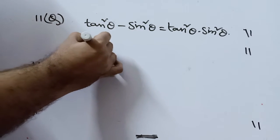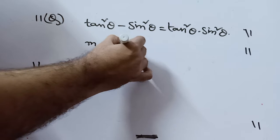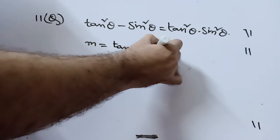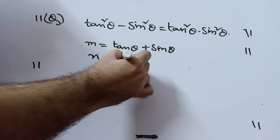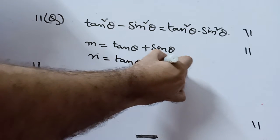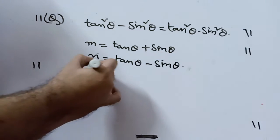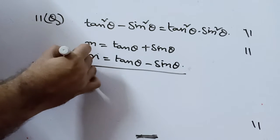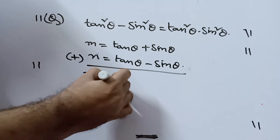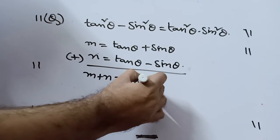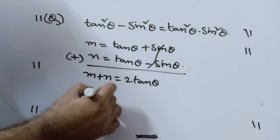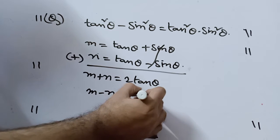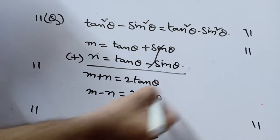What are given to me is m equals tan theta plus sin theta, and n equals tan theta minus sin theta. What I do is I will add up these two. When I add these two, I get m plus n which is 2 tan theta. Sin theta cancels out. And if I find m minus n, that is 2 sin theta.